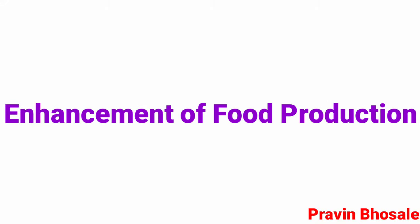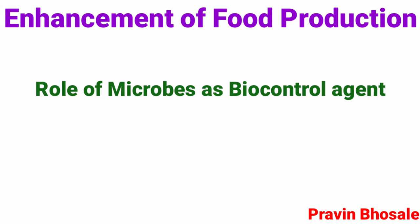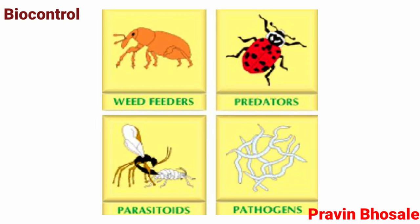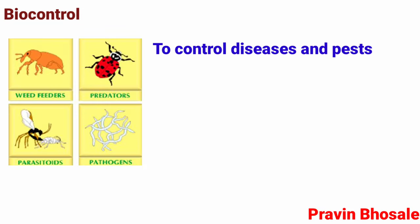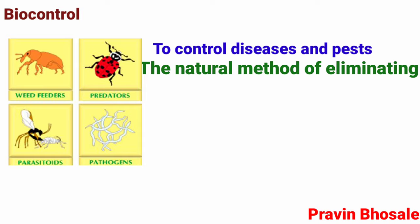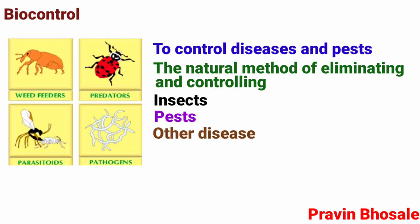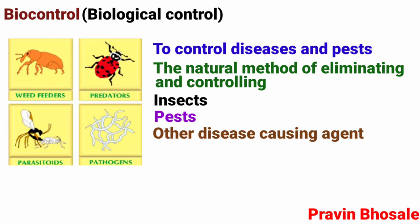Enhancement of food production — this topic covers the role of microbes as biocontrol agents. The term biocontrol refers to the use of biological methods to control diseases and pests. The natural method of eliminating and controlling insects, pests, and other disease-causing agents is by using their natural biological enemies. This is called biocontrol or biological control.